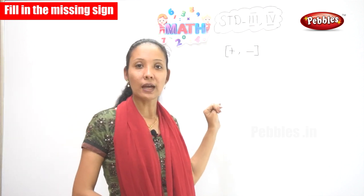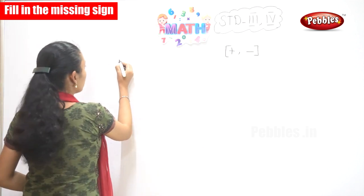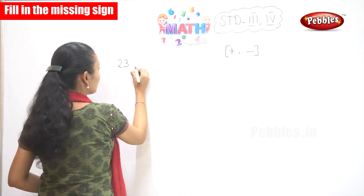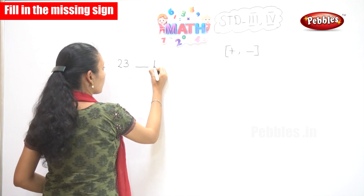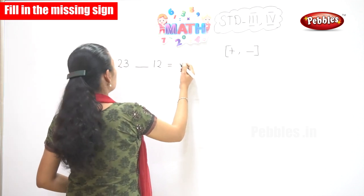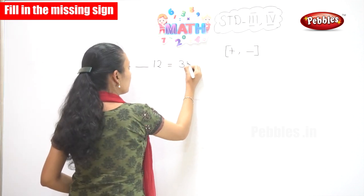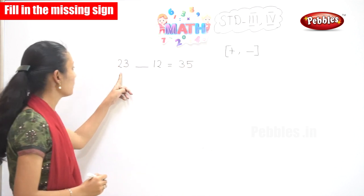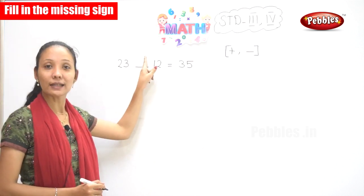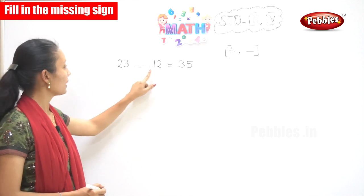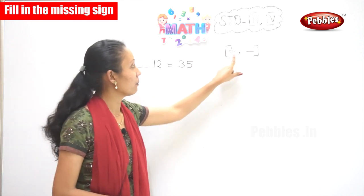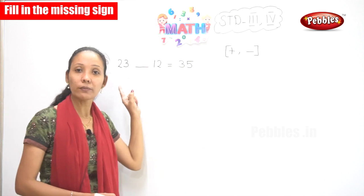Now it is 23 dash 12 is equal to 35. So here it is given: 23 dash 12 is equal to 35. In this dash, you have to fill in the correct sign. How do you know the correct sign? The sign could be plus or minus.